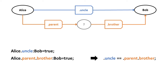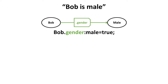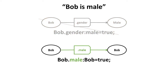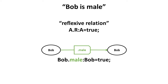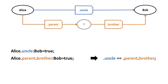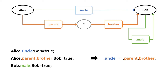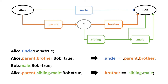Now let's make a second deduction. Uncle and brother both signify male gender, so we know that Bob is male. We encode that Bob is male by writing Bob.male:Bob = true. We call this a reflexive relation when A and B are the same. Back to our Alice-Uncle-Bob relation chart: we know Bob.male:Bob. Just like we did for the uncle relation, we can define the brother relation as the chain of sibling.male. Now we know the A.R:B relation structure.